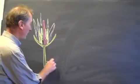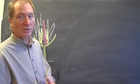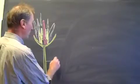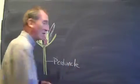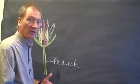So you know down here the stalk that the flower is on is called the peduncle. And then at the base of the flower is the receptacle.